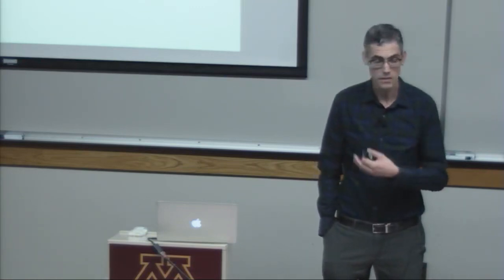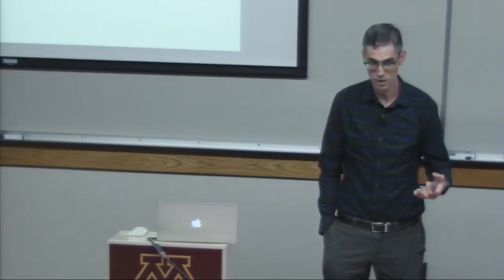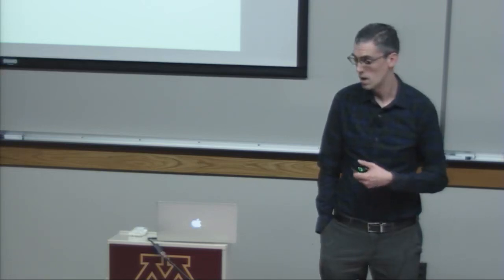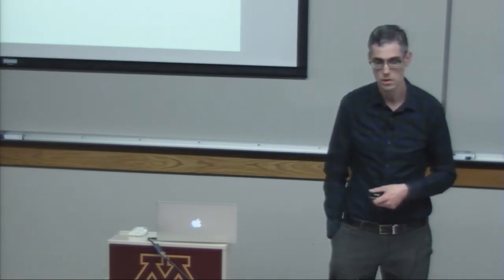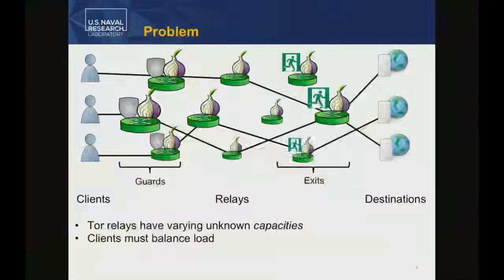To take advantage of these resources, clients need to know what the bandwidths are, and then choose relays in proportion to how much resource they provide. For instance, a user might switch their path from a smaller relay to a middle relay with more capacity once they know that's actually the case.